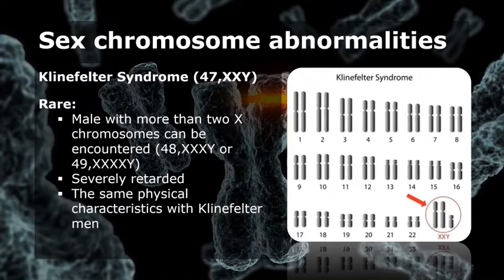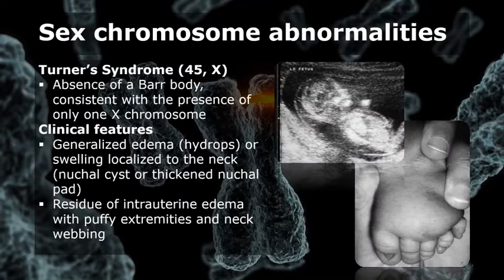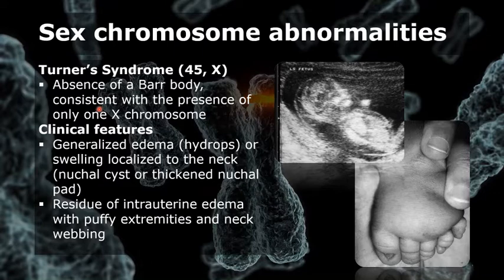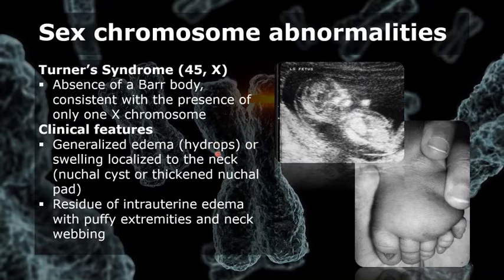Next, after Klinefelter syndrome, we have Turner syndrome. This condition has the absence of a Barr body, which is consistent with the presence of only one X chromosome. Turner syndrome is detected during the second trimester, showing either generalized edema, hydrops, or swelling localized to the neck, nuchal cysts, or thickened nuchal pads.